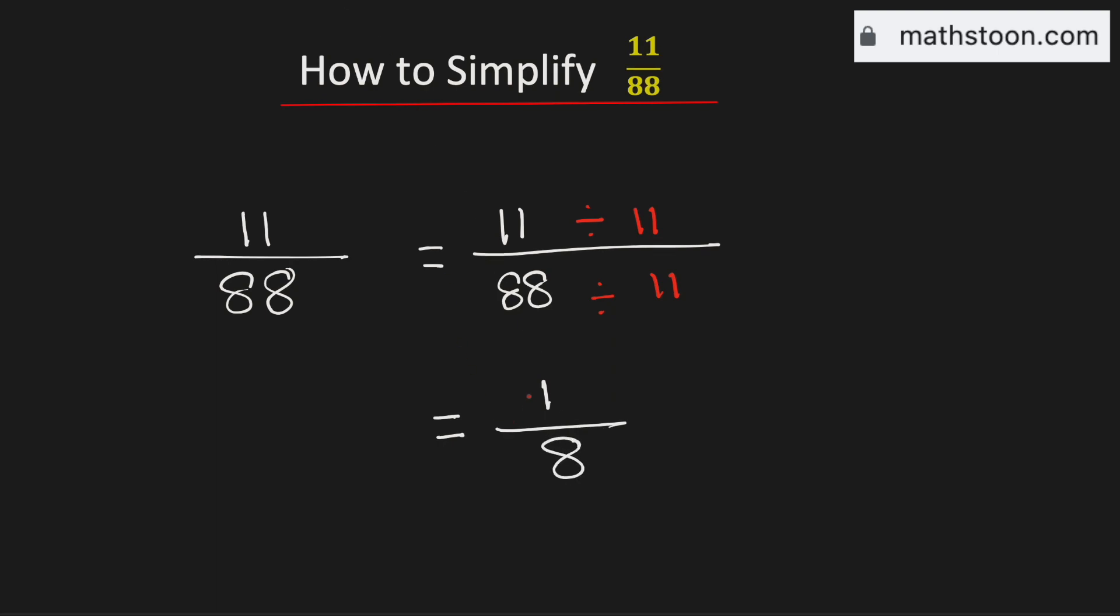Now we know that 1 over 8 cannot be simplified further. Therefore, 1 over 8 is the simplified reduced form of the fraction 11 over 88.